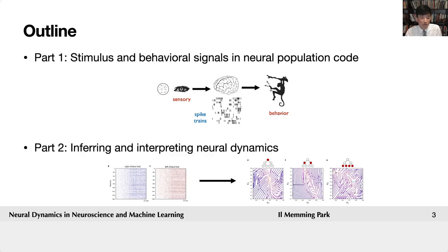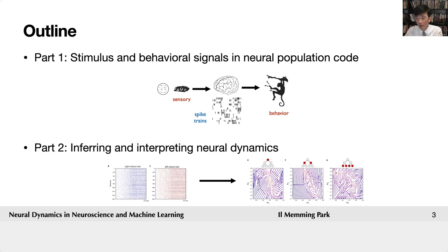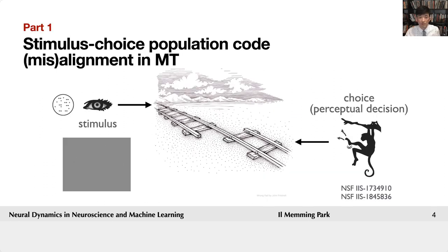For the interest of time, I'm only going to be talking about a couple of lines of research. Today, in the first part, I'll talk about theory and data analysis methods for analyzing some cognitive behavior. In the second part, I'll talk about how to infer neural dynamics from an ensemble of neural time series and also how to interpret and model them such that they are easier to interpret. So let's dive into part one.